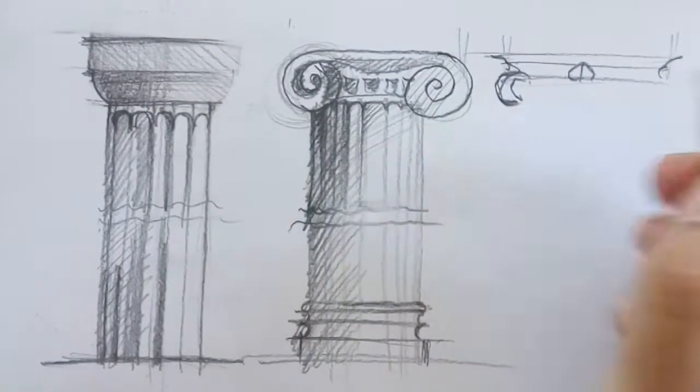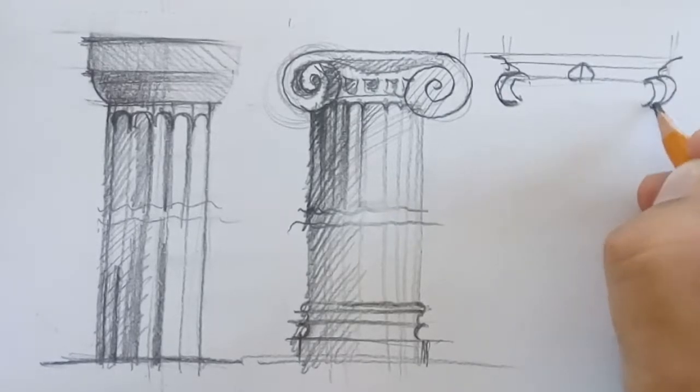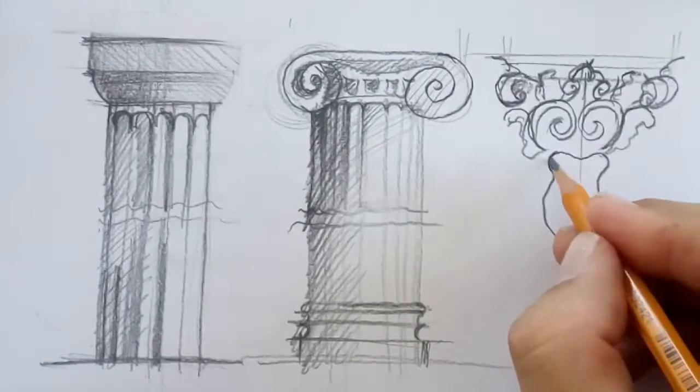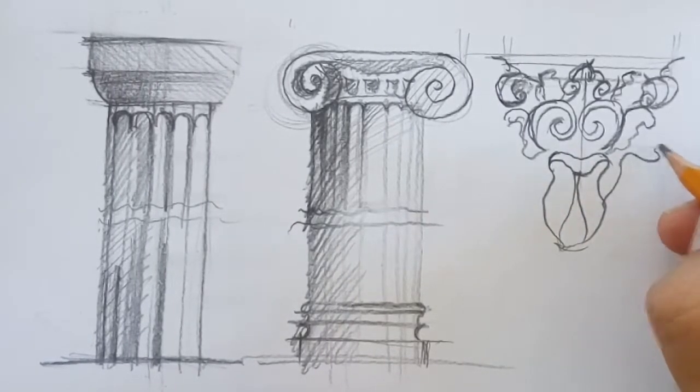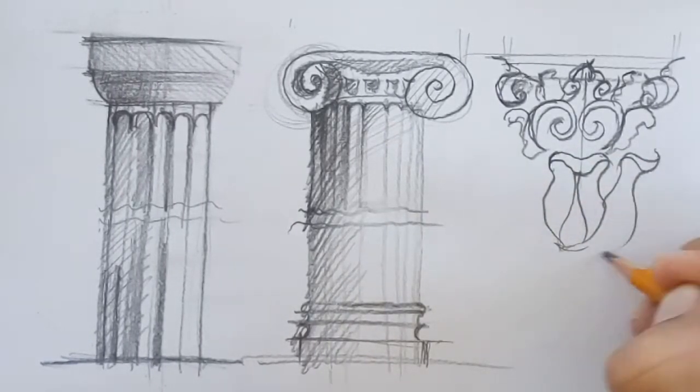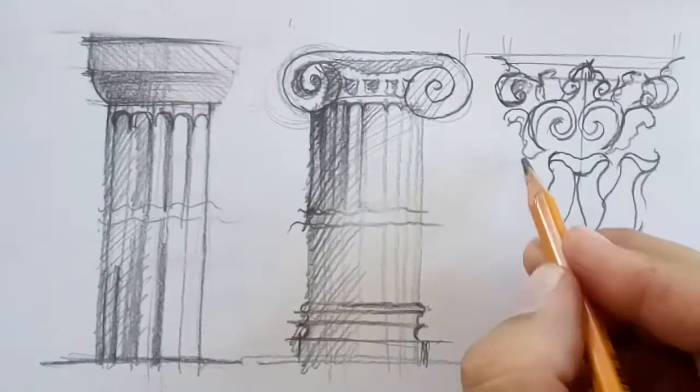The Corinthian style is the newest one. It was invented around 400 BC. It was used mainly during the Roman era in the Roman Empire and in Greece.